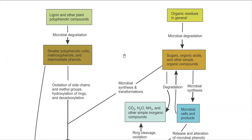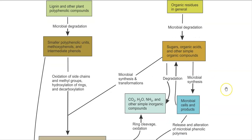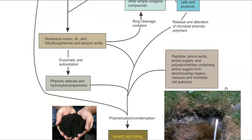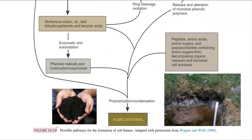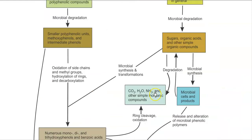Looking at this diagram, it shows the overall steps involved in humus formation. The final humic material will be highly dark black in color.